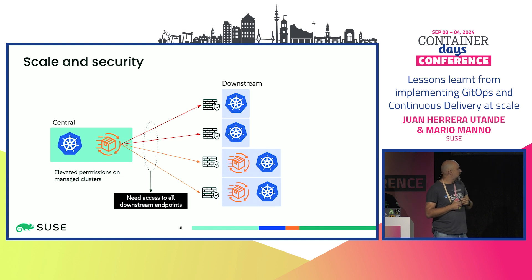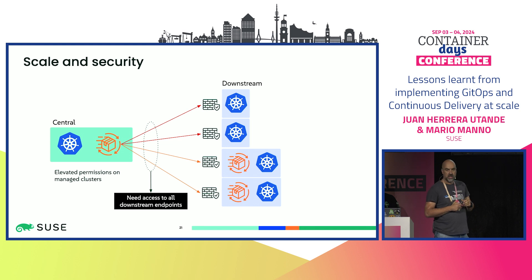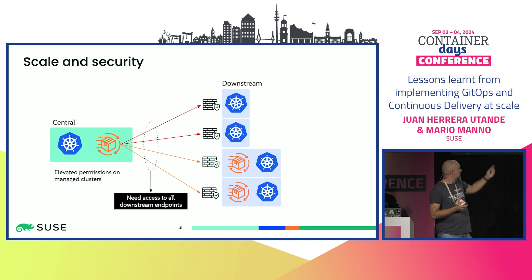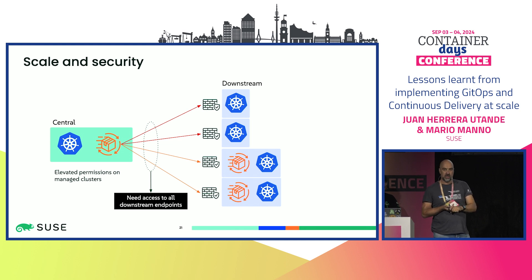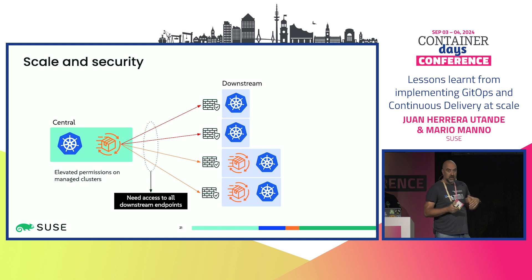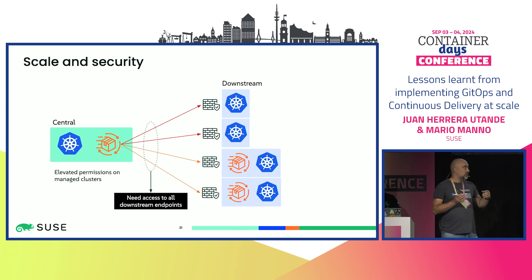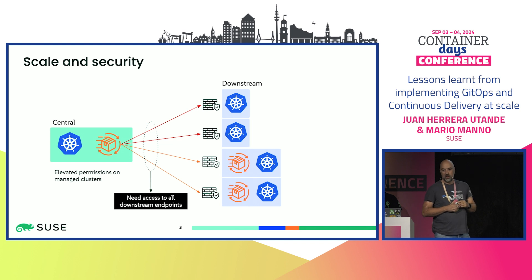The delegation model reduces this because downstream components handle execution without requiring cluster admin from the center. But some extensions use proprietary protocols — it's not securing things in a standard Kubernetes way. On top of that, remember our industrial customer doesn't fully control their IT. For proper security, you need to do firewalling at all downstream locations, which was a big challenge.